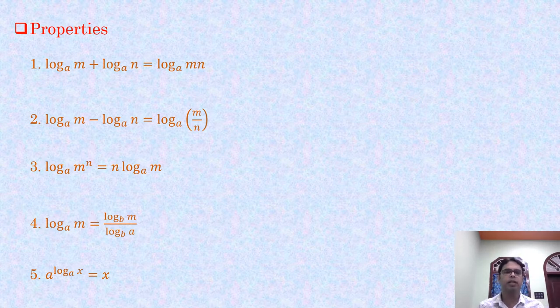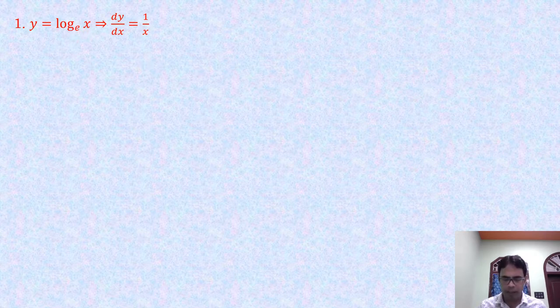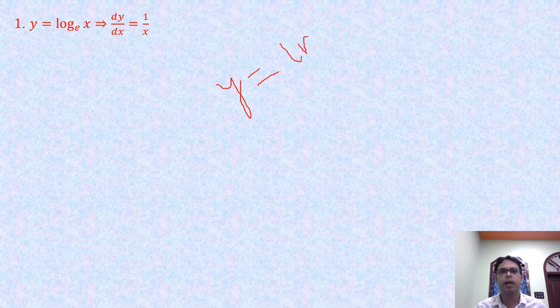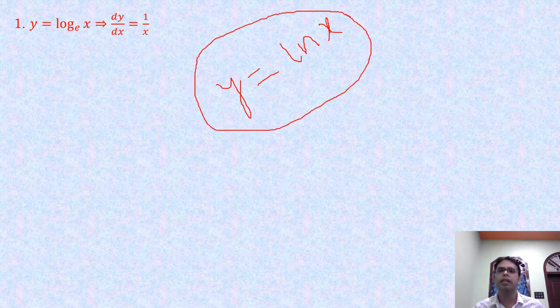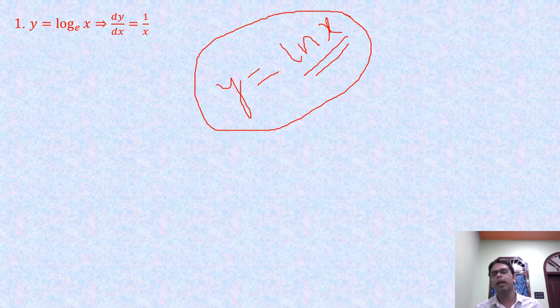Now we come to the main topic: differentiation of exponential and logarithmic functions. If y = log(x) — where the base is e — you may also write it as y = ln(x). Writing ln(x) means the base is e (natural logarithm), so it is not necessary to mention the base separately.